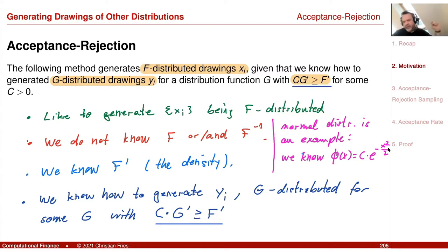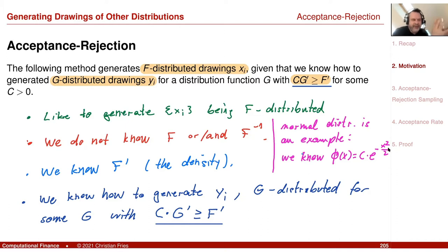In this situation I can generate XI, and from a mathematical point of view I can generate it precisely — there's no approximation. For the normal distribution also, from a computer implementation point of view, I have an exact implementation.